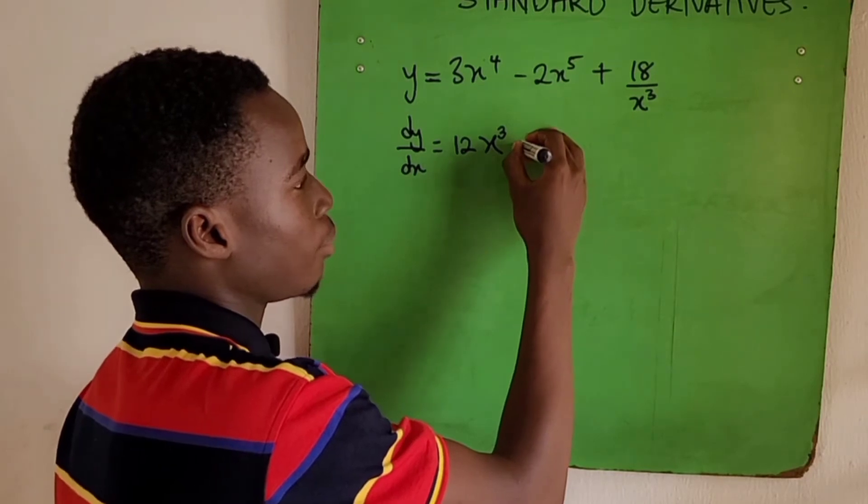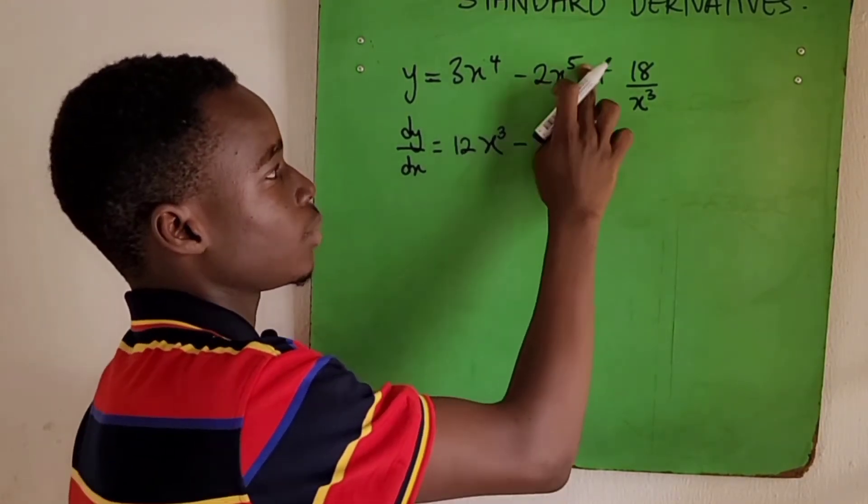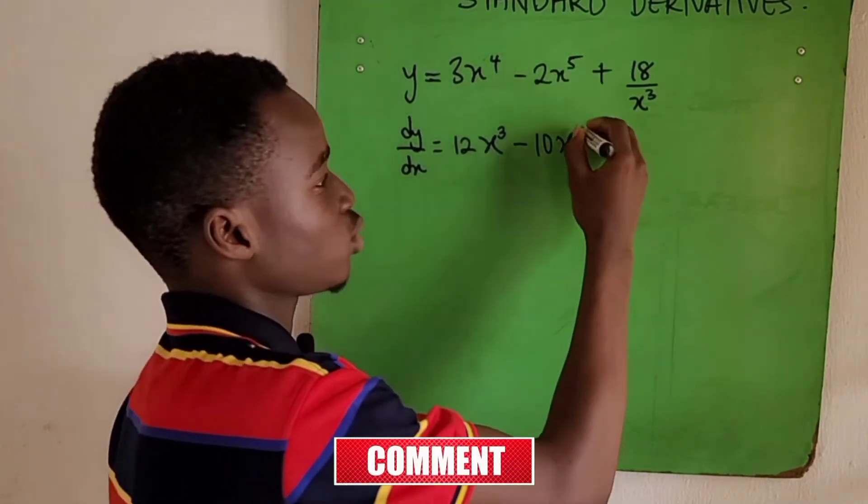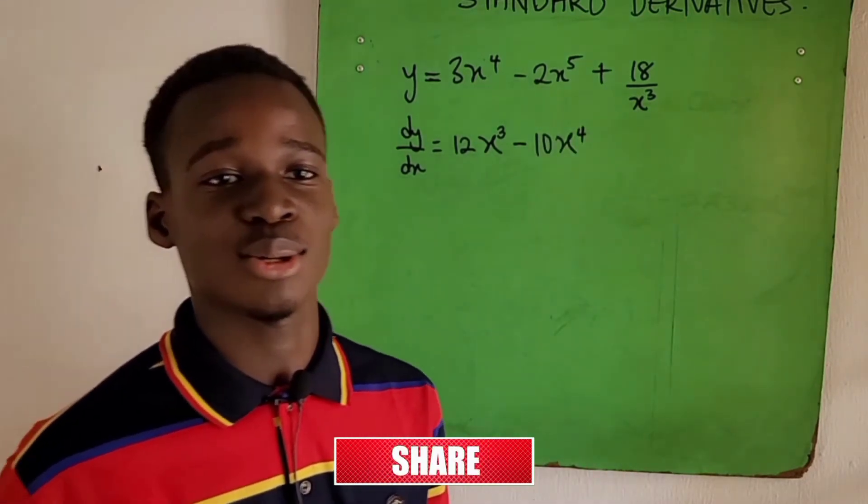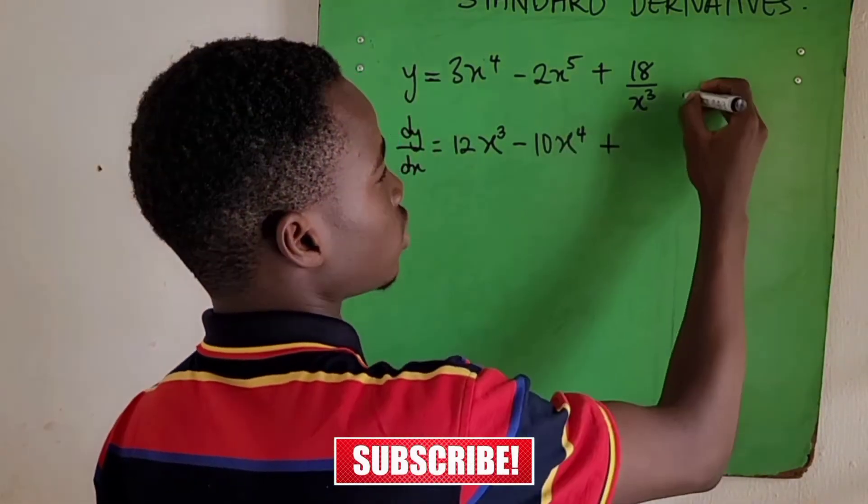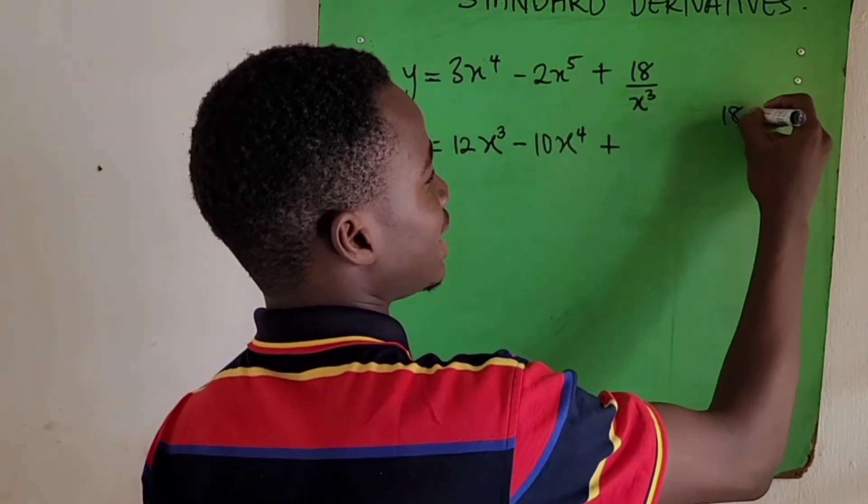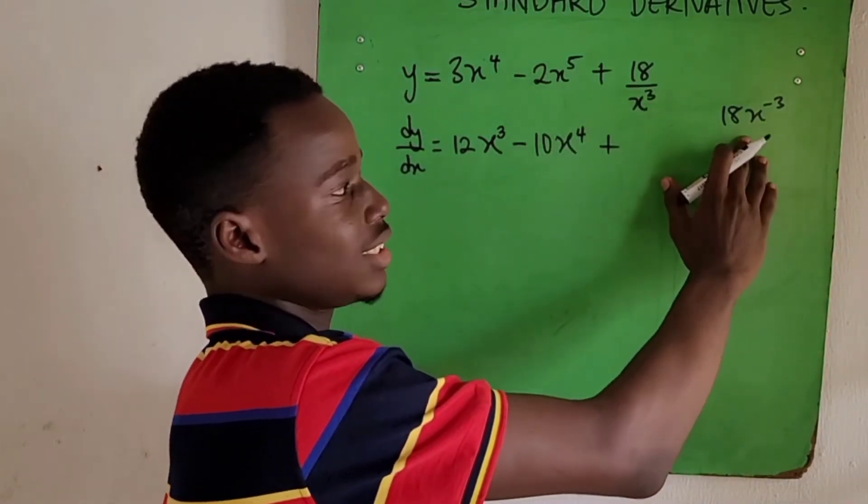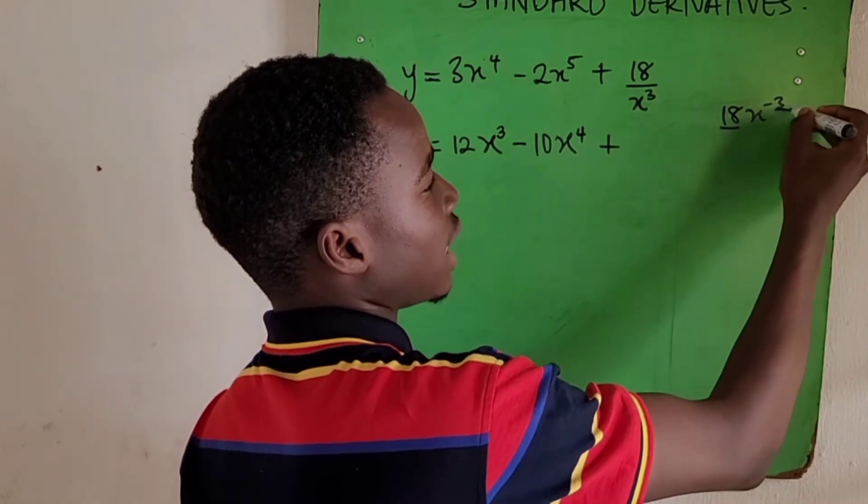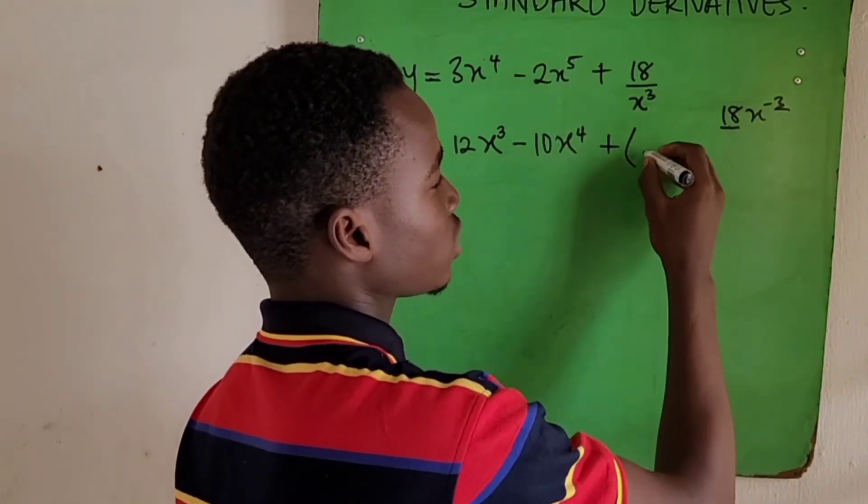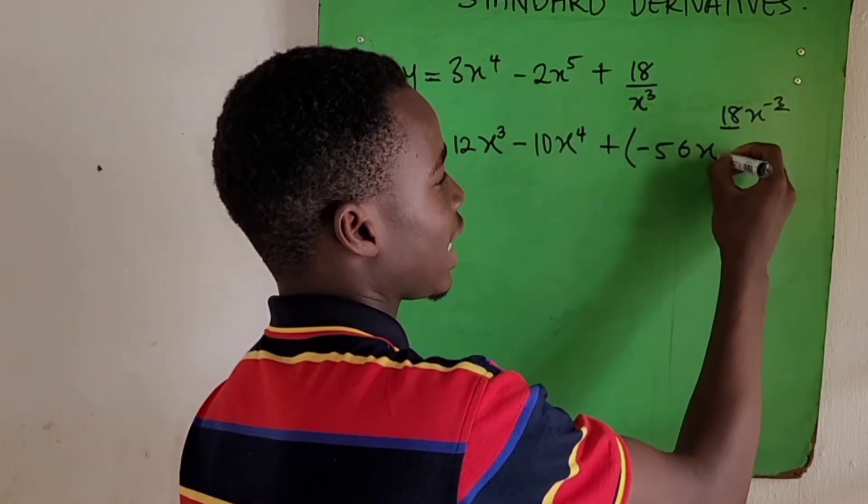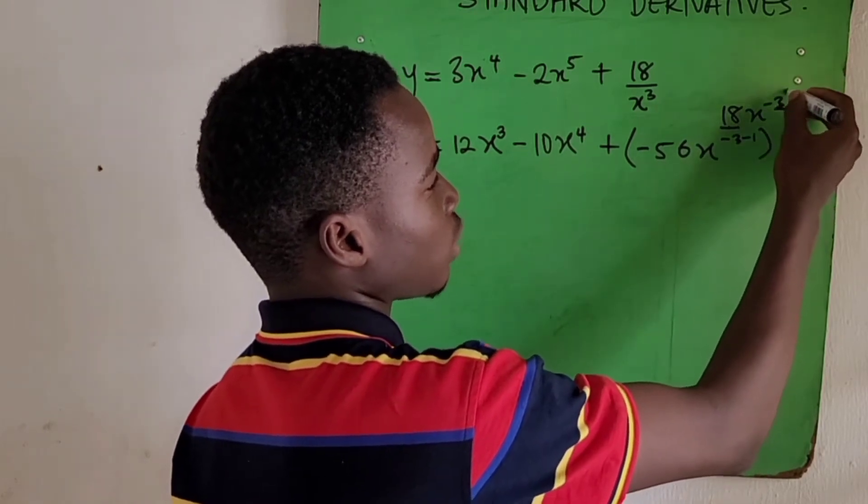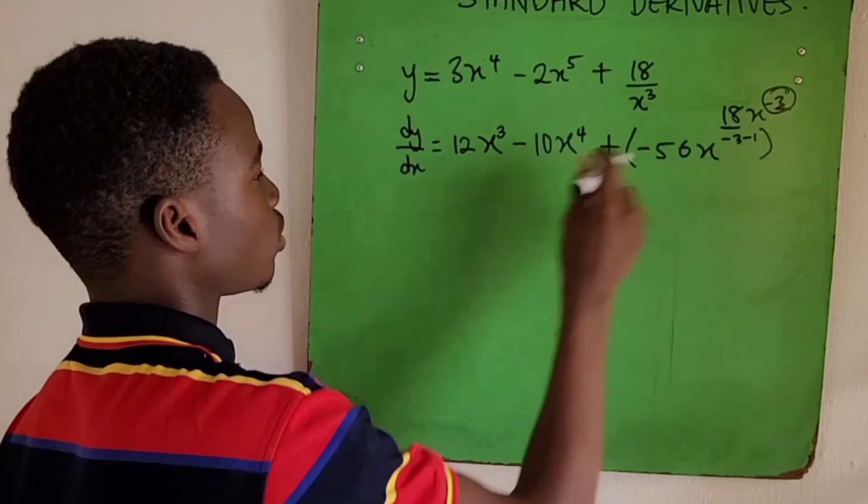Then we'll move to the next one: minus a times n, 2 times 5 is 10, we'll have our x, then our new power will be n minus 1, which is 5 minus 1, 4. Then coming to this, we have 18x^(-3). According to the law of indices we can rewrite this. So what we're having: 18 times minus 3 is minus 54x, then we have minus 3 minus 1.